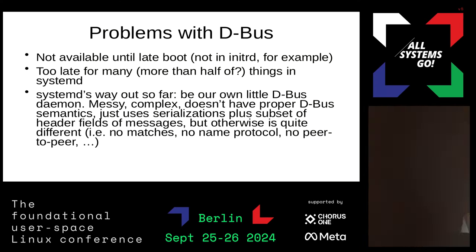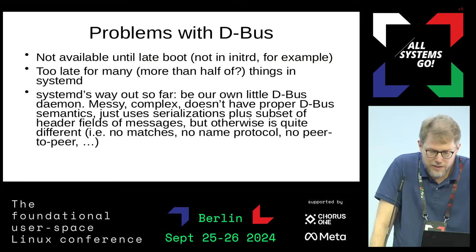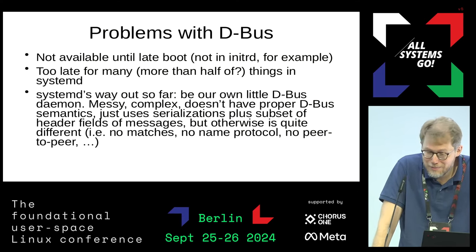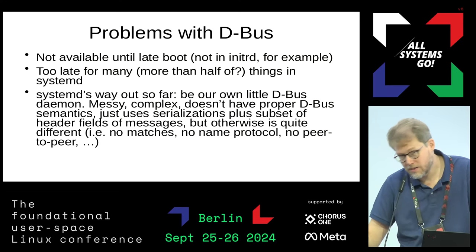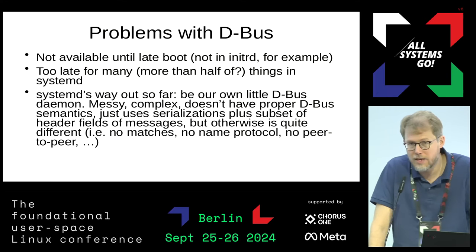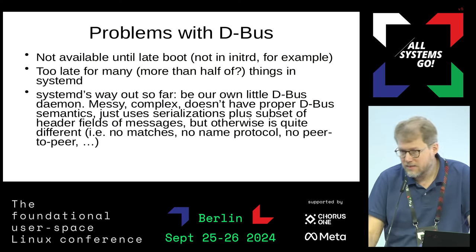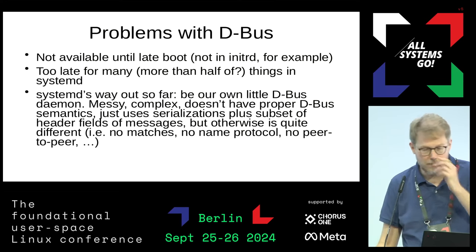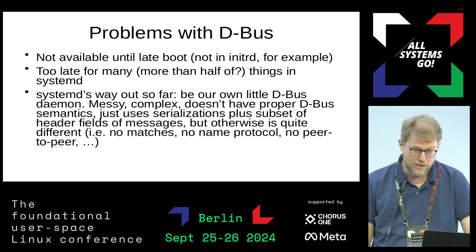Because of these other problems, I don't think it's realistic to fix this. DBus is too late for probably more than half of the things that systemd does. Networkd was limited because DBus comes so late. Systemd itself, resolved, all these things must be available during earliest boot already, and that makes DBus a really problematic choice.